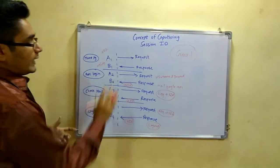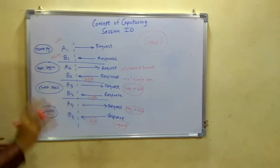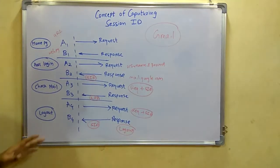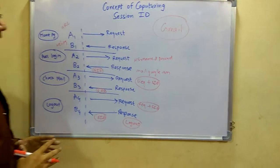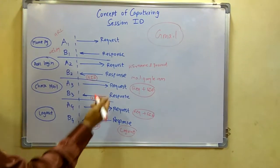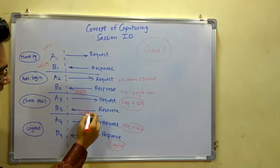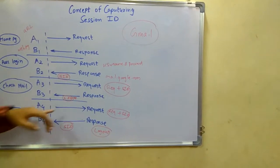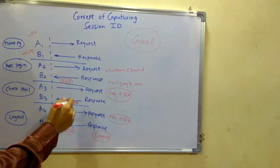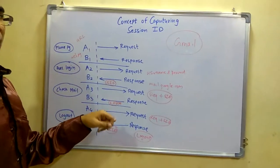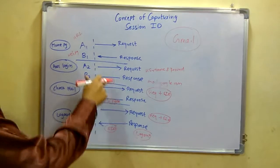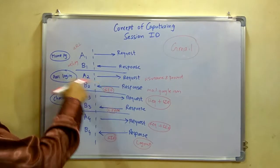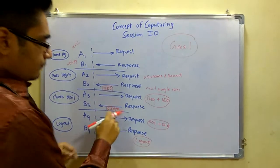Now where will you actually capture the session ID? There are many session IDs generated — there are 3 session IDs generated in this scenario. So if you capture this session ID at the wrong place, for example capturing it here at an incorrect step, this would be unrealistic.